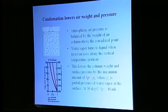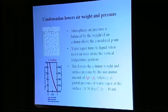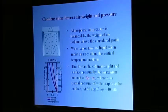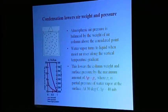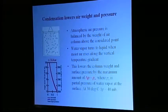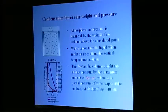Atmospheric air consists of gas molecules. These molecules exert pressure on any surface as they hit it while chaotically moving. In the gravitational field of Earth, air pressure is balanced by the air column weight above the considered point. Therefore, when condensation occurs in the atmosphere and vapor molecules disappear from the gas phase, turning to liquid, there appears a weight shortage.